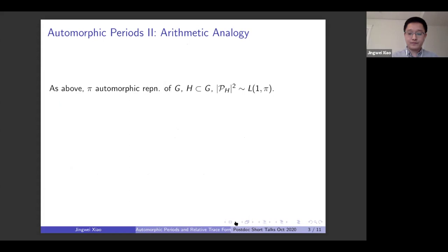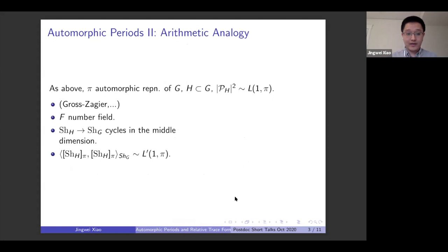So the setup is similar to what we had here, where F is a number field. And replacing the automorphic quotient, we consider the corresponding Shimura varieties whenever they can be defined.